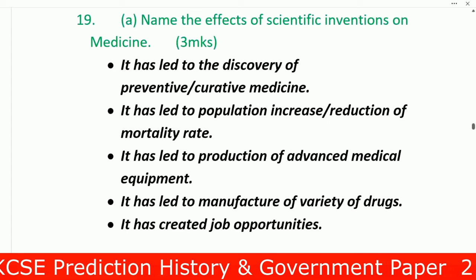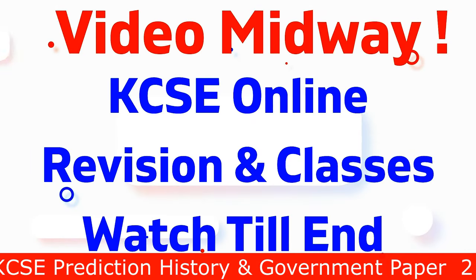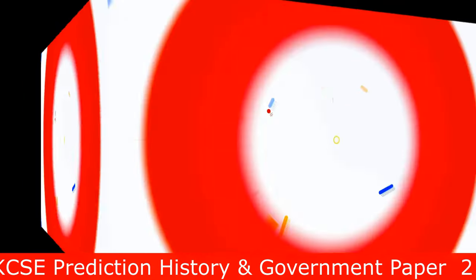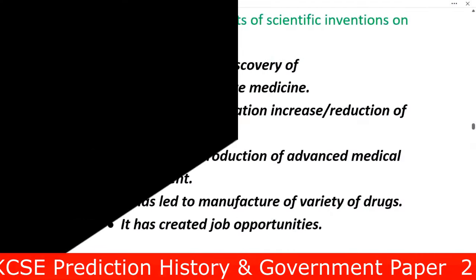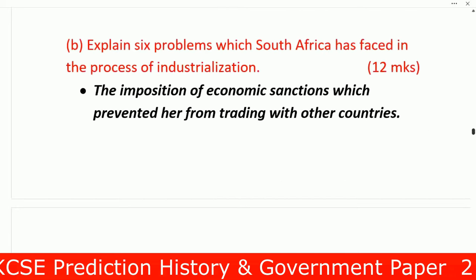Name two effects of scientific inventions on medicine — this is also very common. Number one: it has led to discovery of preventive and curative medicine. Number two: it has led to population increase through reduction of mortality rates. Number three: it has led to production of advanced medical equipment. Number four: it has led to manufacture of a variety of drugs.